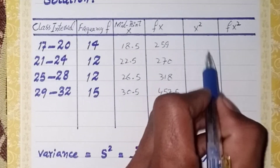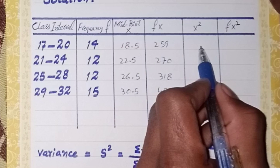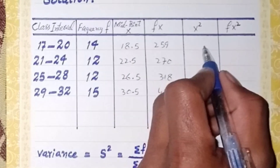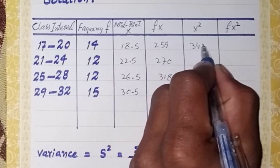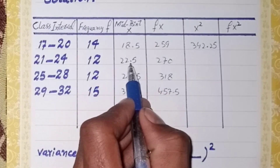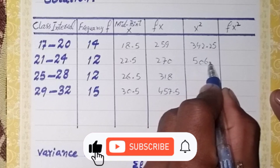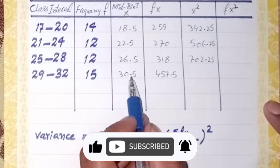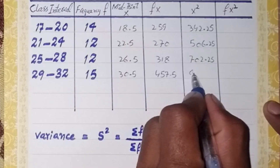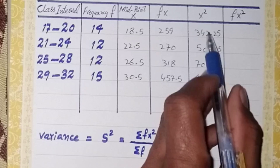Next, we find the x² column. The first value of x is 18.5, so x² is 342.25. The second value of x is 22.5, giving x² equal to 506.25. The last value of x is 30.5, giving x² equal to 930.25. In this way we find each value of the x² column.